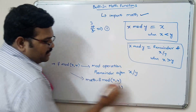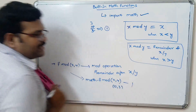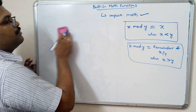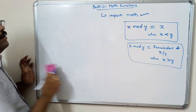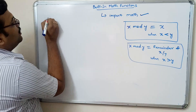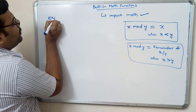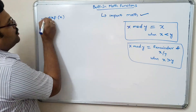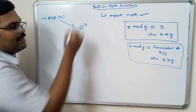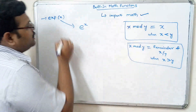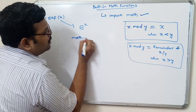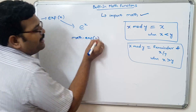So math.fmod(10, 3) will return 1 as the result. Next is the exp function — the exponent of x. This will return e raised to the power x, the exponential value. In order to implement this, we write math.exp(x).